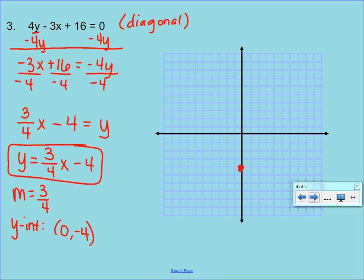From that point, we go up 3, and we go over 4 to the right. Again, up 3, over 4, and we have 3 points. Let's connect those 3 points to make a nice straight line with arrows on the end of it.